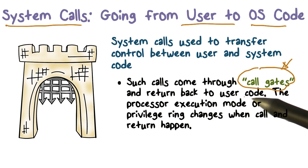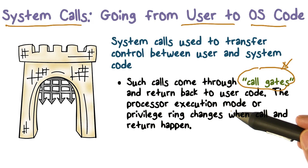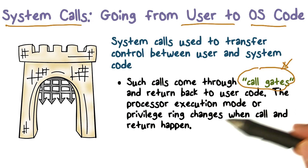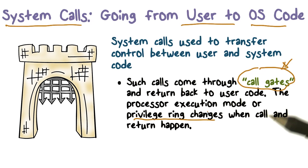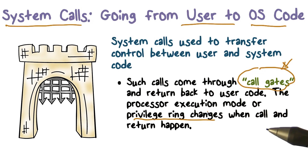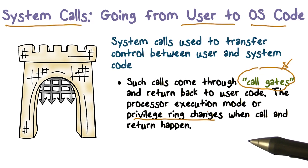Once the system call completes, the user code resumes, but the processor execution mode has to change as a result — we're going from user mode to system mode. The privilege ring or the mode is going to change. And we'll have to change some memory mappings and data structures that keep track of those, because we're going to be able to access memory now that we couldn't access before. So some registers have to be saved, others have to be loaded, and now we are executing in a different protection domain.